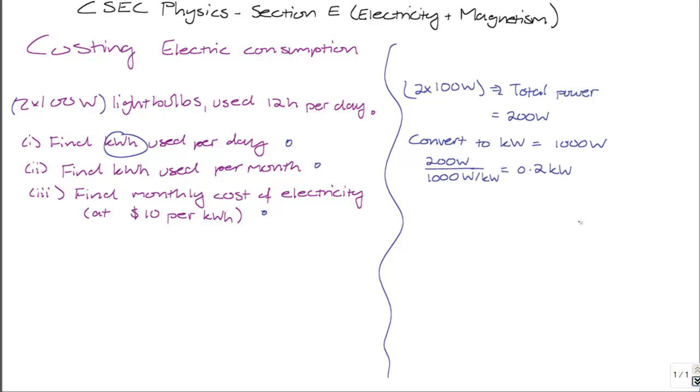Now, each light bulb, or both light bulbs are used for 12 hours per day. So the kilowatt hours of energy used per day, obtained by multiplying 0.2 kilowatts by 12 hours per day, which gives us a daily usage of 2.4 kilowatt hours. The kilowatt hour is a unit of energy, and the kilowatt hour is what's directly used to calculate the cost of this energy. So we found the kilowatt hours used per day.